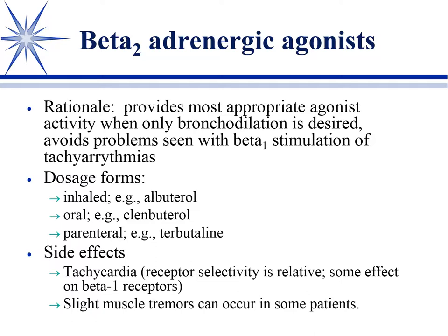Going back to the autonomic nervous system - these same agents are used as tocolytics in human medicine. Tocolytic means to lyse the birth process, so it stops uterine activity and prevents premature births in humans.